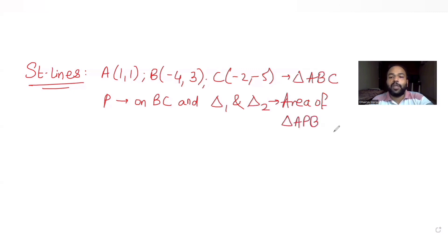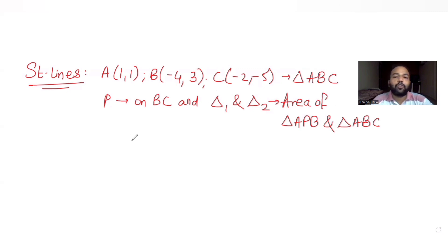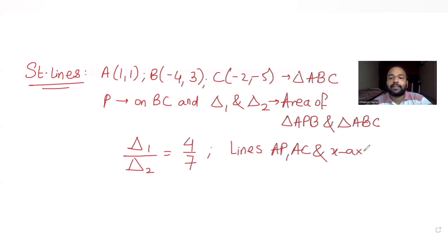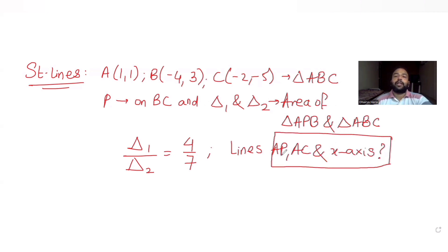Δ1 and Δ2 are the areas of triangles APB and triangle ABC respectively. We have been told the ratio Δ1 upon Δ2 is 4 to 7. Then we have been asked to find the area enclosed by lines AP, AC, and the x-axis.